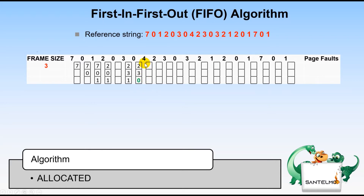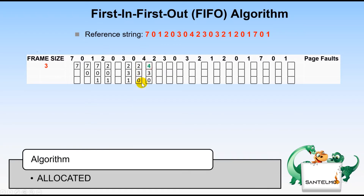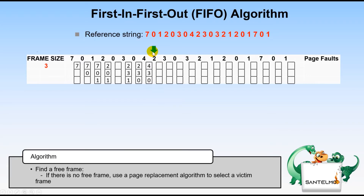Next, allocate 4 — no free frame, so we choose the victim. The victim is 2, so replacing 2 with 4 yields frames: 2, 4, 3, 0. Next, allocate 2 — no free frame, so we choose the victim again. The victim is 3, since 3 was the first in first out among the current pages.